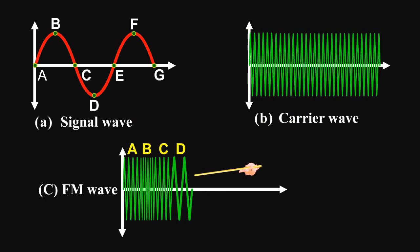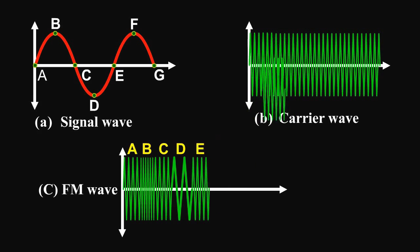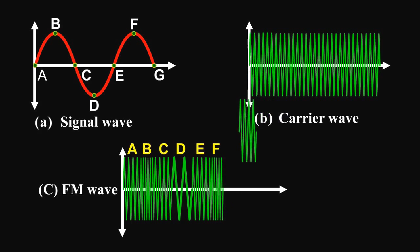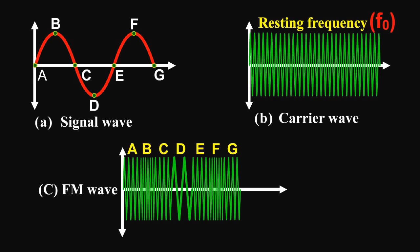A louder signal causes greater frequency change in the modulated carrier, as indicated by increased bunching and spacing of the waves compared with a relatively weaker signal. The frequency of an FM transmitter without signal input is called the resting frequency or center frequency f₀, and this is the allotted frequency of the transmitter.